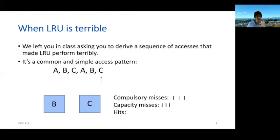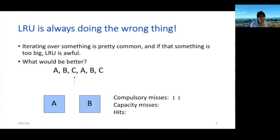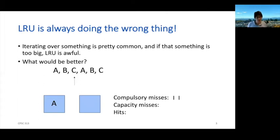So what's the best thing we could do here, and is it practical? LRU did the wrong thing every single time. Let's see what we really want to happen. If we were smart and could use Belady's algorithm, what would we be doing? Once again, we're trying to access C, and A and B are in the cache. Now I'm going to look forward in time and realize that I don't want to evict A — I'm going to evict B instead. So I get rid of B, put C in there, take my third compulsory miss. But now when I move to A, it's still in the cache and I get a hit.